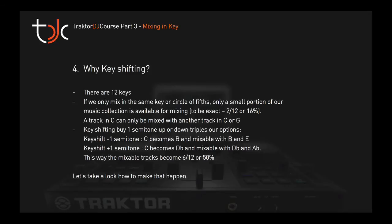So if I have a C track, I can only play another C track or a G track. All the other 10 keys are not available according to this principle. But if I key shift my track by one semitone, a much bigger variety of tracks becomes available.